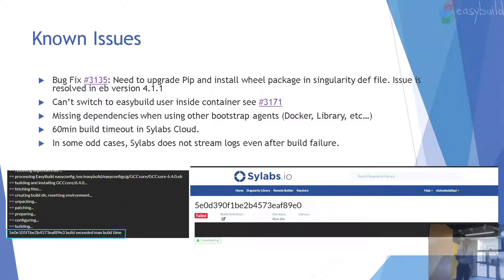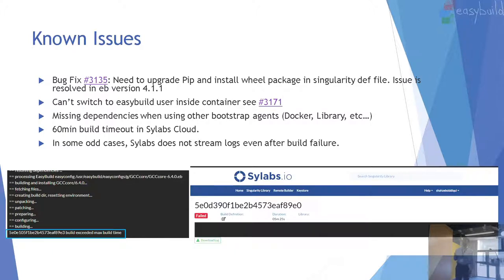There are some other issues uncovered during testing. One is that you can't switch the EasyBuild user inside the container — that's issue 3171. I've been talking with the Scilabs folks about what the issue is; we found a solution but it's not yet done in the framework. There are also dependency issues I've found using different bootstrap agents, particularly Docker and Library. Library is the bootstrap agent when you push containers to Scilabs, and initially there was a 30-minute timeout that was pushed up to 60 minutes because I couldn't build GCC.